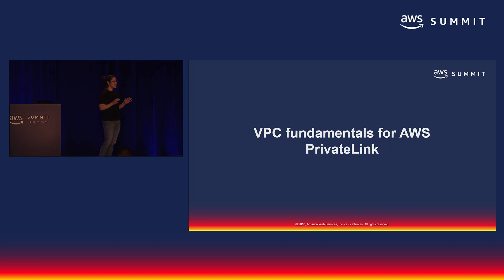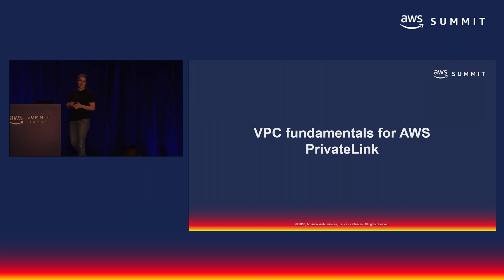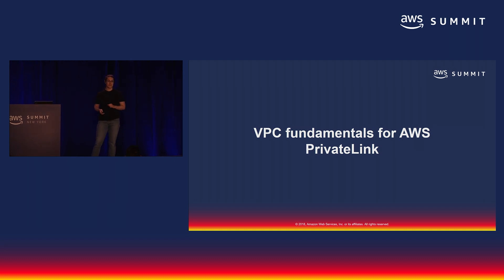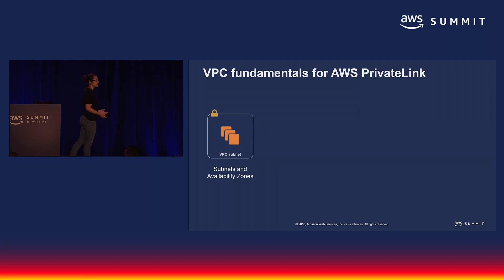There is an entire talk on VPC Fundamentals available on YouTube. Today I'm going to focus on a few basics relevant for PrivateLink, going through them pretty quickly. We're going to cover subnetworks, subnets and availability zones, and how you can use those to deploy higher availability applications. We'll look at routing traffic, how to stop getting traffic you don't actually want, and an element called an elastic network interface, or ENI, which is a fundamental virtual networking device that is very relevant to PrivateLink.